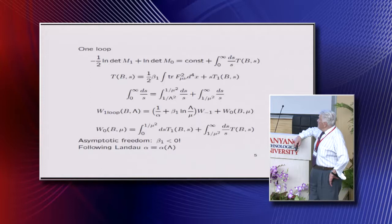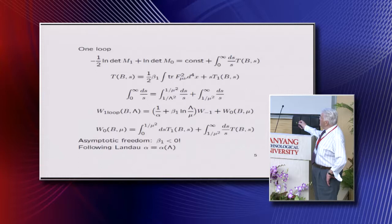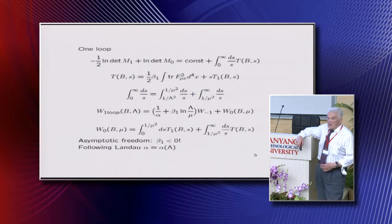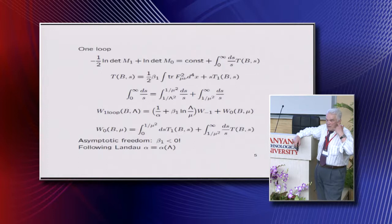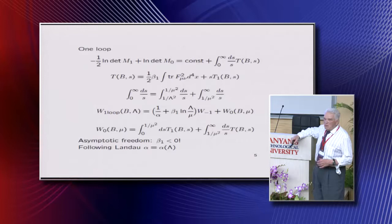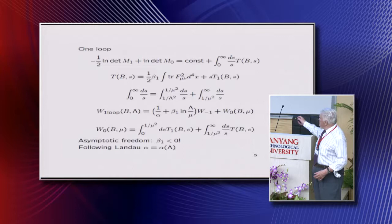And now, because beta_1 is negative, then one over alpha plus beta_1 log makes sense if you choose alpha properly. And so the main idea, which in fact Landau advertised: he didn't like subtractions and counter terms and so on. He was just saying that renormalization is that you have parameters in your Lagrangian depending on the regularization parameter. If you have limit, then it's good. If you don't have limit, then something is bad.